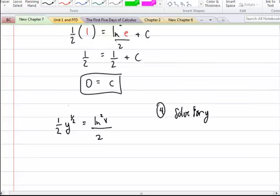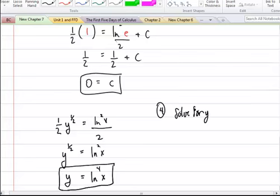So I'm going to multiply both sides by 2. So I have the square root of y equals the natural log of x squared. And now I'm going to square both sides again. And I'll have y equals the natural log to the fourth power of x. And that will be my solution to the problem that we started with.